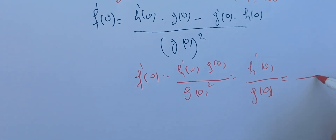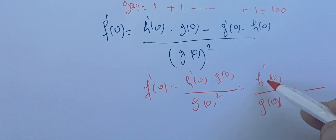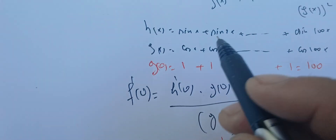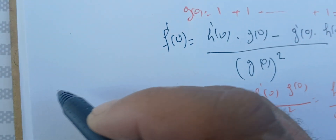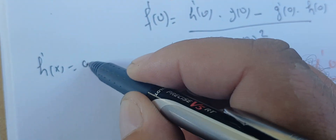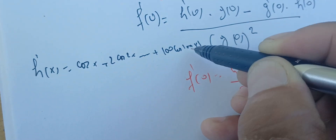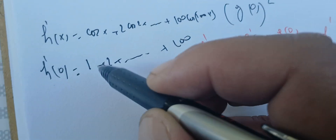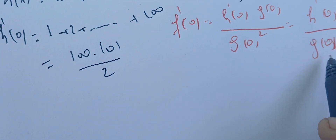We know G(0) = 100, so now we need H prime of 0. Differentiating H(x) gives H prime of x = cosine x plus 2 cosine 2x plus ... plus 100 cosine 100x. Plugging in 0: H prime of 0 = 1 plus 2 plus ... plus 100, which equals 100 times 101 over 2.